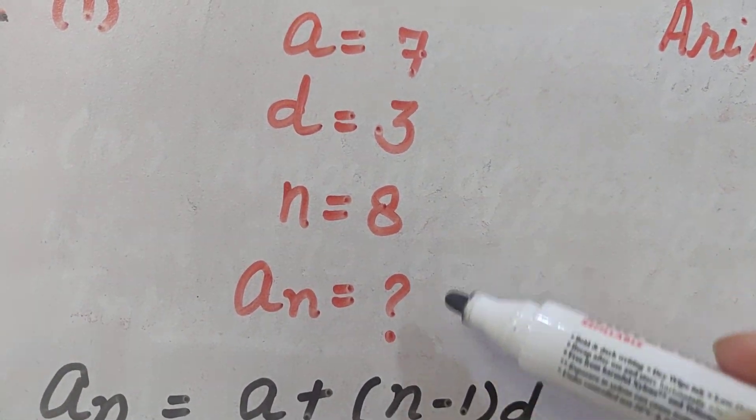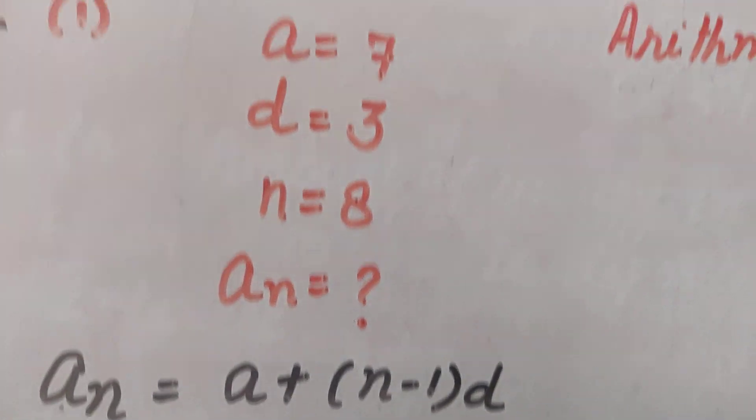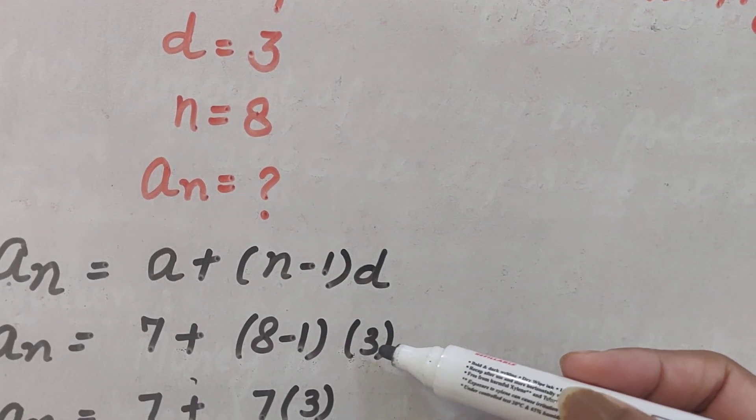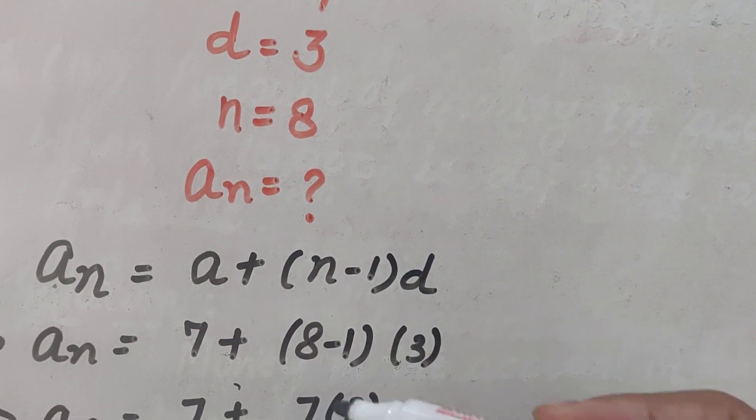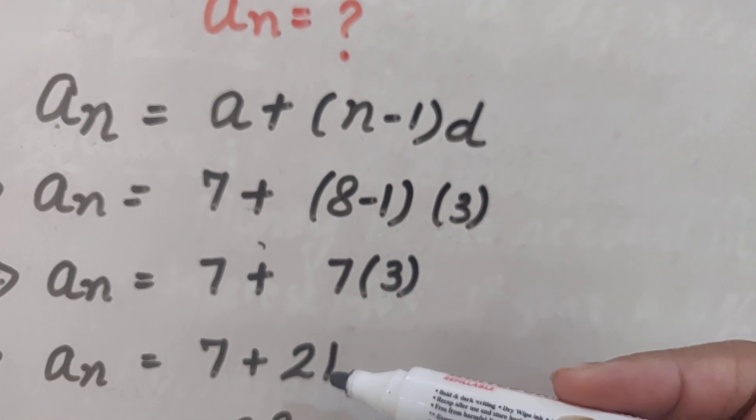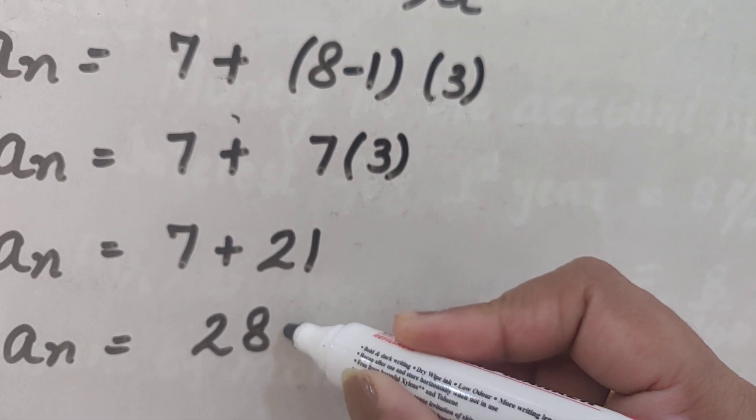After that, you just have to put all these values in this formula. A is 7, D is 3 and N is 8. After putting these values, you will be able to find the answer which is 28.